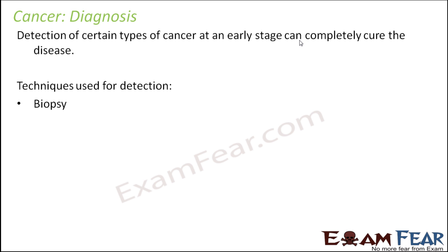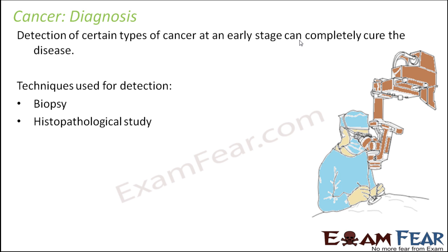The techniques used for detection include biopsy. In biopsy, the portion where a tumor is said to be found — let's say near the breast — a small portion of that tissue is taken out and cut. Then a lot of studies are done on that particular tissue. Histopathological study is done to see what kind of cells are there; it is kept for quite a few days to observe how the growth is, how the cells divide and how fast they grow.